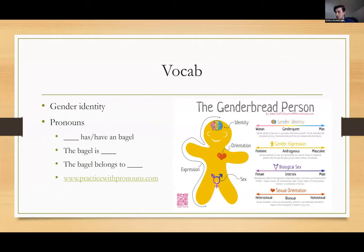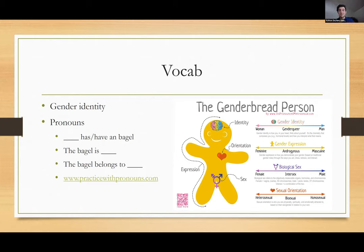We're going to go over some vocabulary. Since this is kind of an introductory level presentation, we want to go over some things. So, gender identity — right in front of you, you will all see the gender bread person. This is a really good visualization on how to see gender identity versus sexual orientation versus biological sex, which even then is not anywhere close to binary. Humans are weird. Genetics are weird.